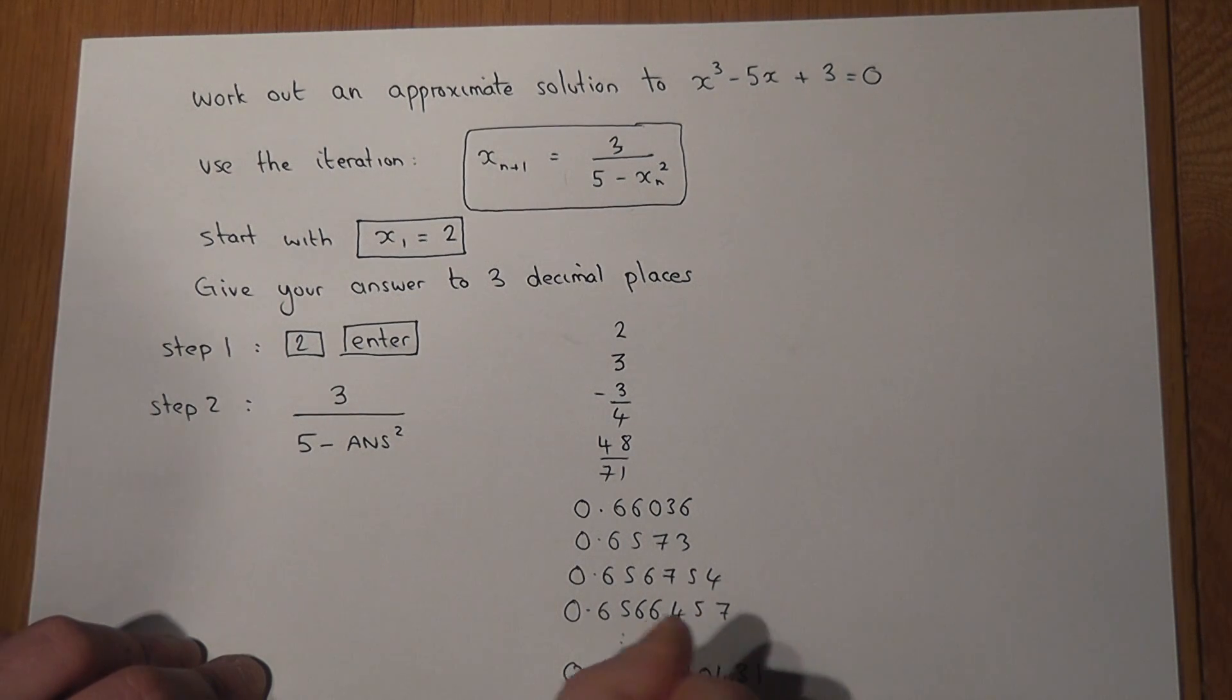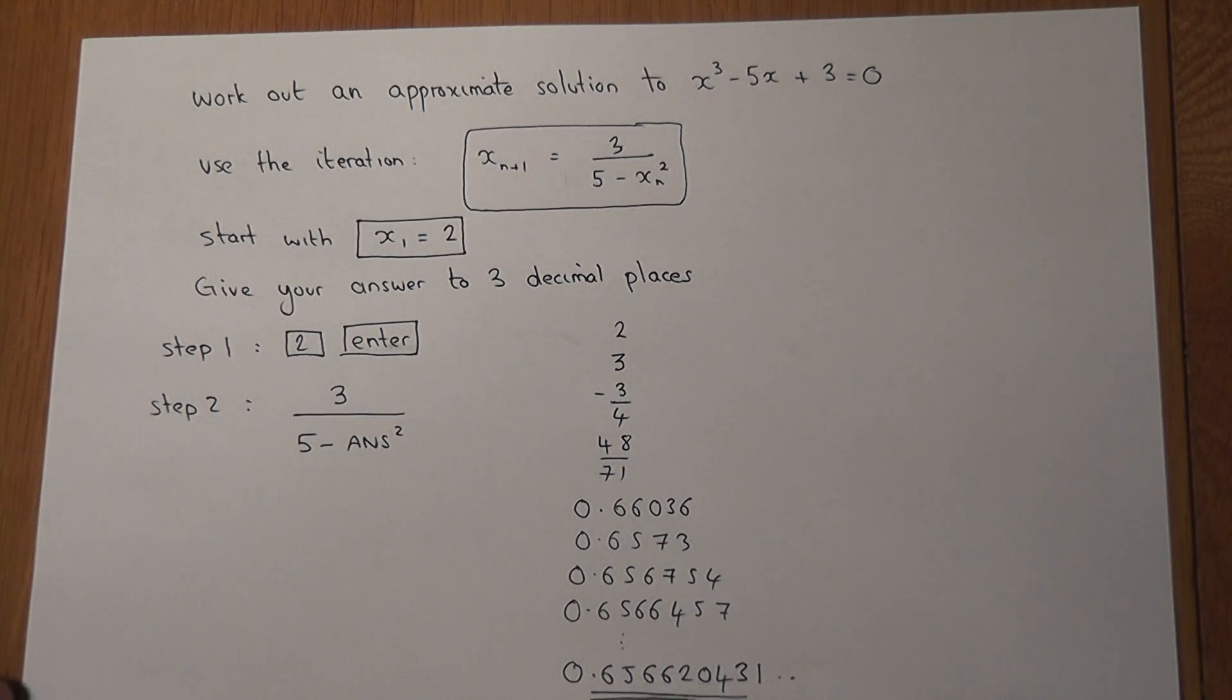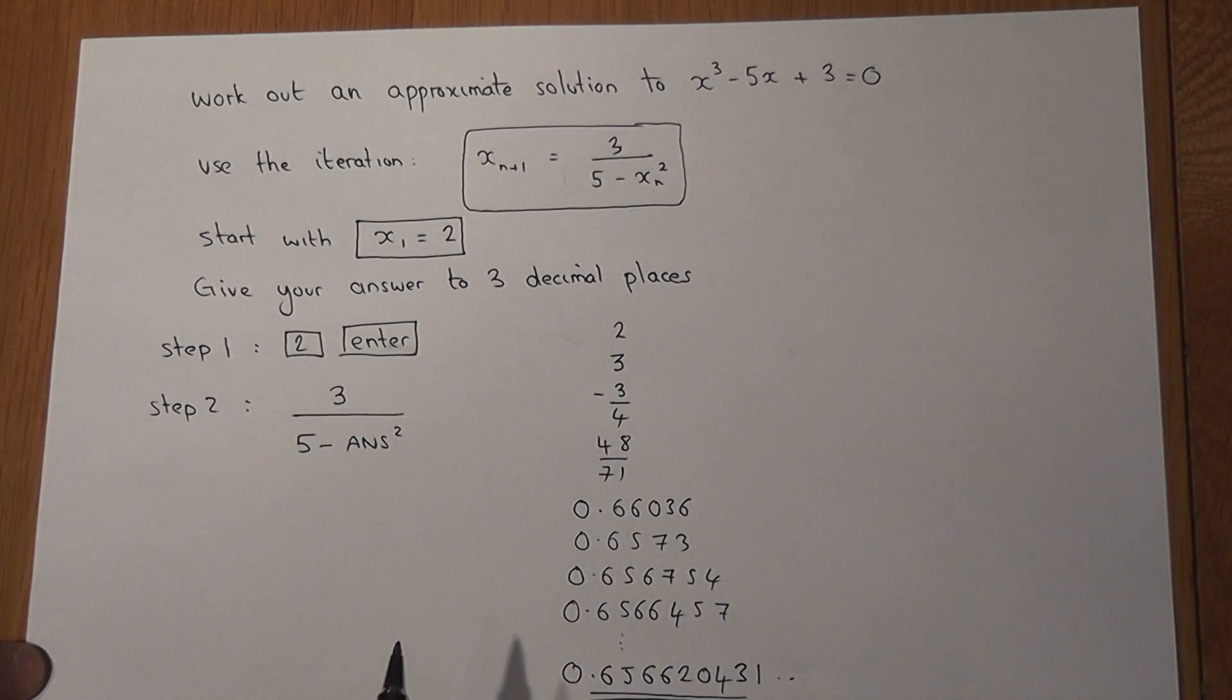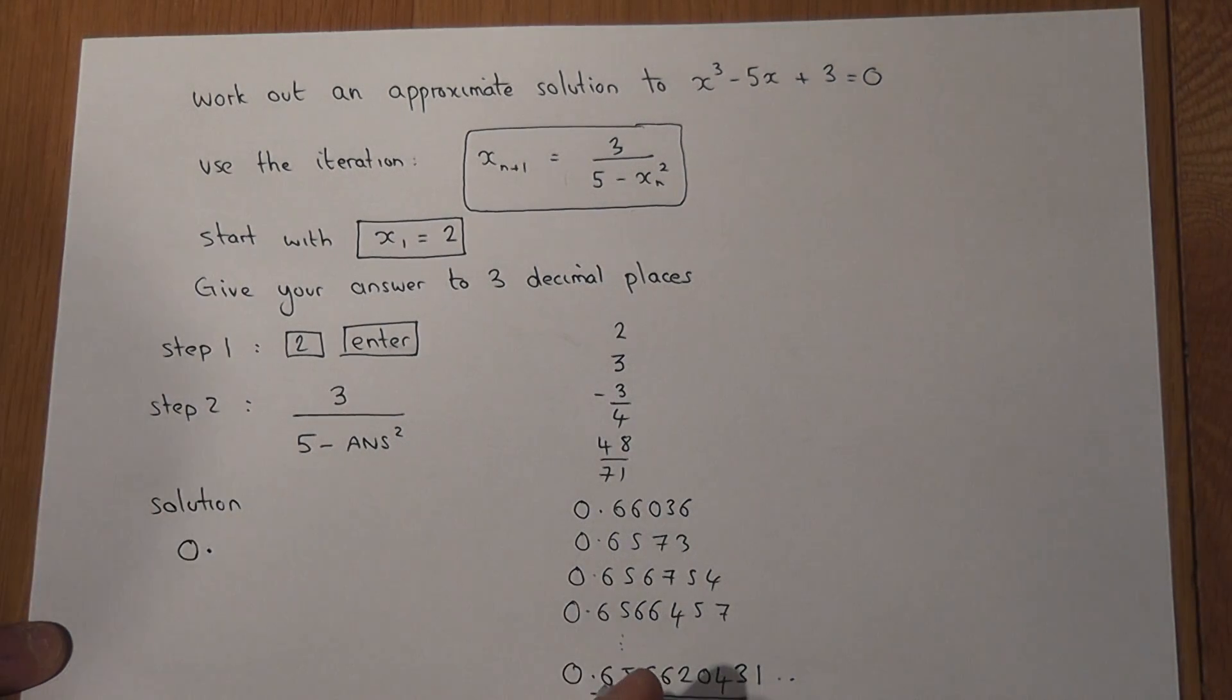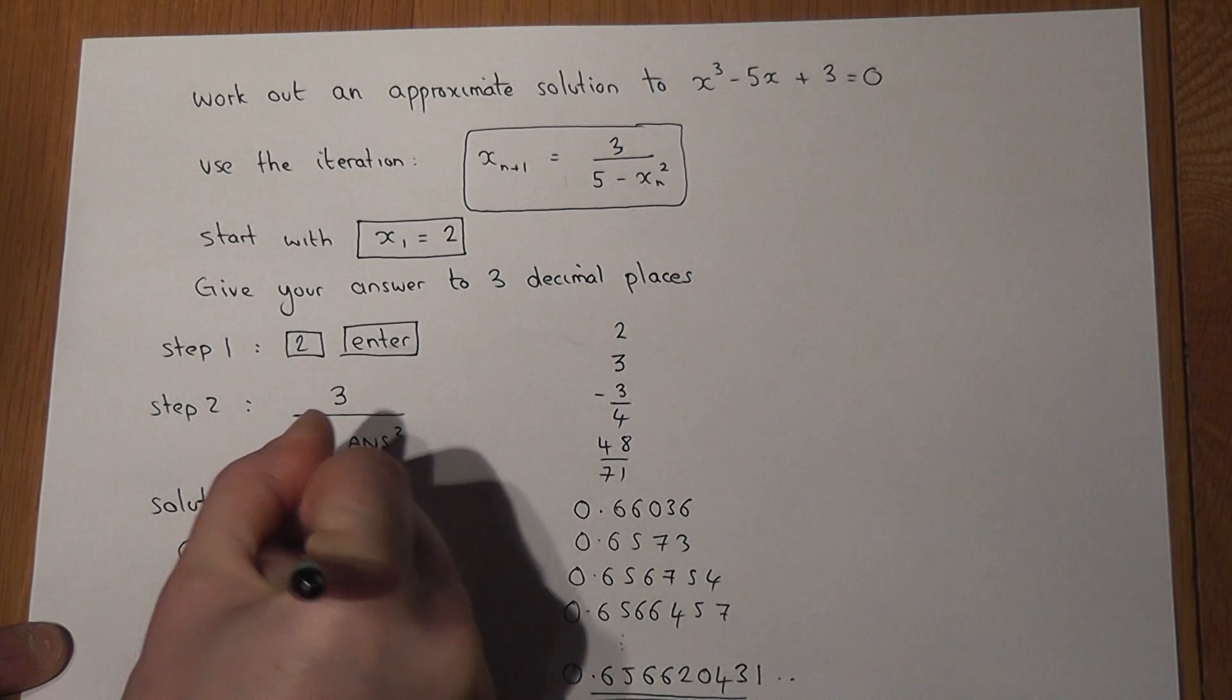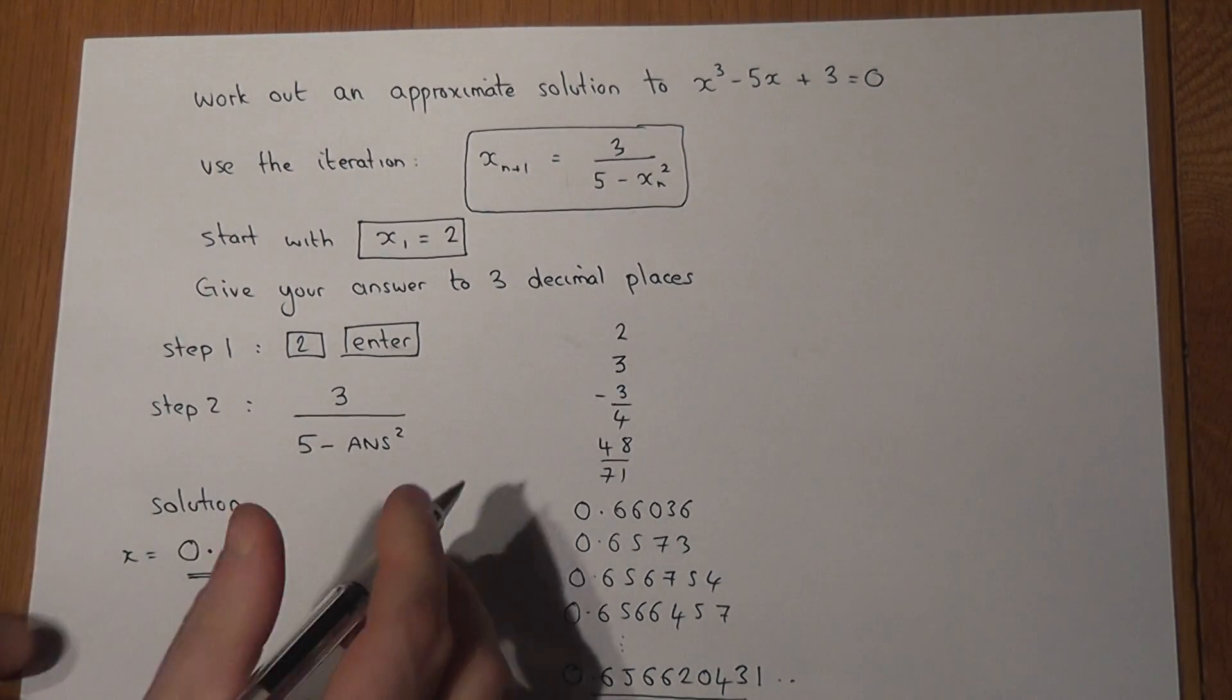You press enter over and over again until it stops changing, and that is the answer. The question asked for your answer to three decimal places, so my solution will be 0.657, and once again to 3dp.